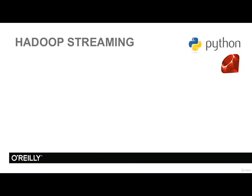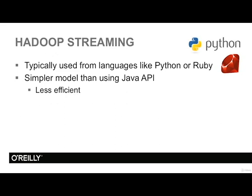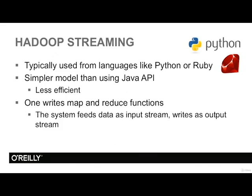Easier than the native Java APIs, we have Hadoop Streaming, typically used by languages like Python and Ruby. The model is simpler than using Java APIs, but it is also less efficient. You would write Map and Reduce functions. The input goes as the standard input stream into the Map function, the results are written as standard output, and that feeds into the Reduce function. Finally, the output creates the resulting file. The model is fairly simple and the code tends to be much shorter than Java code.